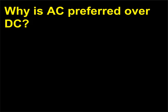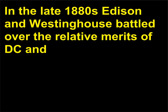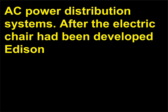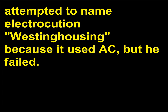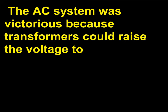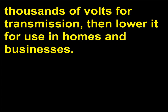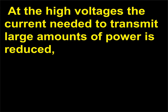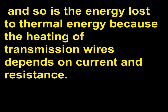Why is AC preferred over DC? In the late 1880s, Edison and Westinghouse battled over the relative merits of DC and AC power distribution systems. After the electric chair had been developed, Edison attempted to name electrocution 'Westinghousing' because it used AC, but he failed. The AC system was victorious because transformers could raise the voltage to thousands of volts for transmission, then lower it for use in homes and businesses. At high voltages, the current needed to transmit large amounts of power is reduced, and so is the energy lost to thermal energy because the heating of transmission wires depends on current and resistance.